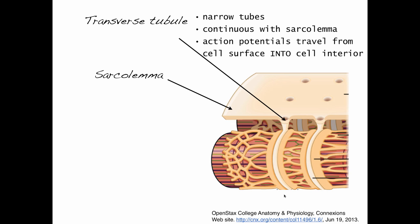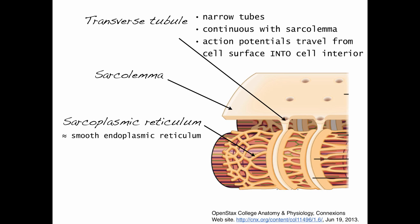This feature allows an action potential to travel from the cell surface into the cell interior. The action potential travels across the plasma membrane and down the T-tubule — this will be really important for initiating contraction. Right beside the T-tubule is the sarcoplasmic reticulum, which is this network of tubules. Essentially, it's the skeletal muscle smooth endoplasmic reticulum. It surrounds myofibrils and is going to store calcium, which will become important later when we talk about action potentials traveling down the T-tubule and causing the release of calcium from the sarcoplasmic reticulum.